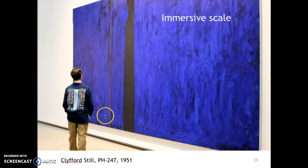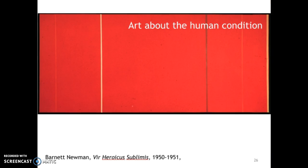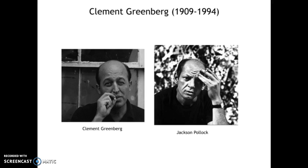Finally, abstract expressionists were interested in making art about the human condition. One of the main proponents of abstract expressionism as a style was the art critic Clement Greenberg — he was born in 1909 and died in 1994 — and he really promoted Jackson Pollock and the other abstract expressionists as producing artwork that was the apex of artistic expression. Greenberg claimed that art functions best when it critiques itself, and if you're wondering what that means, it's a heady question.